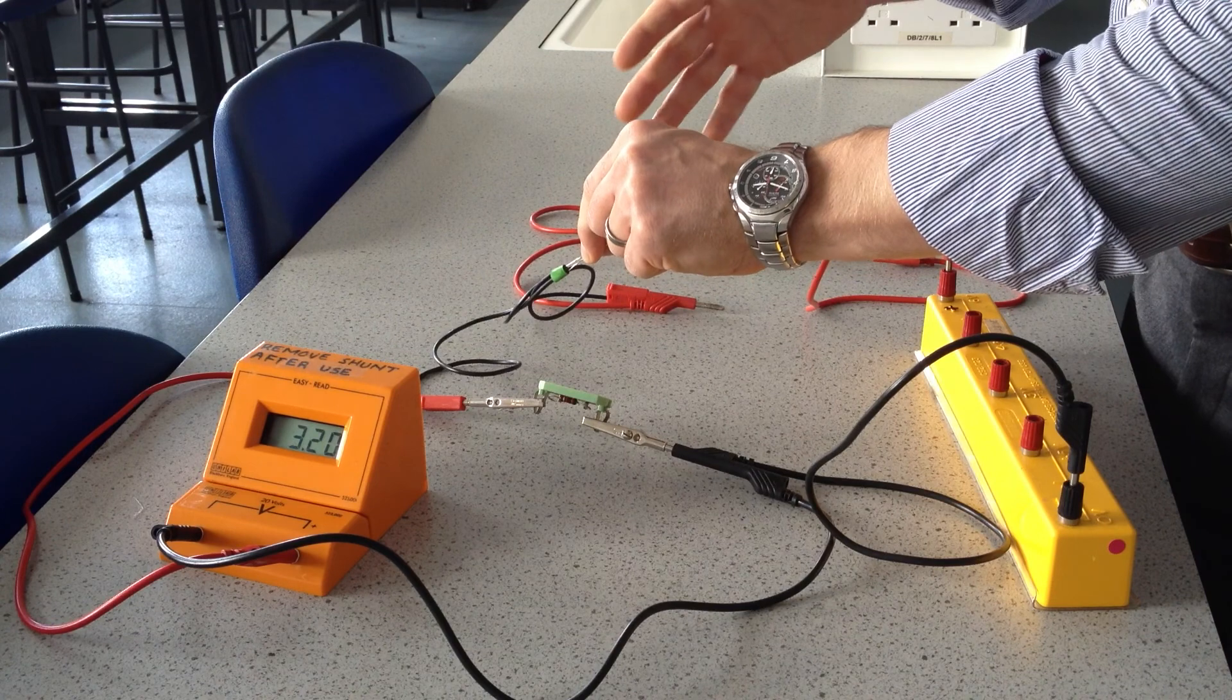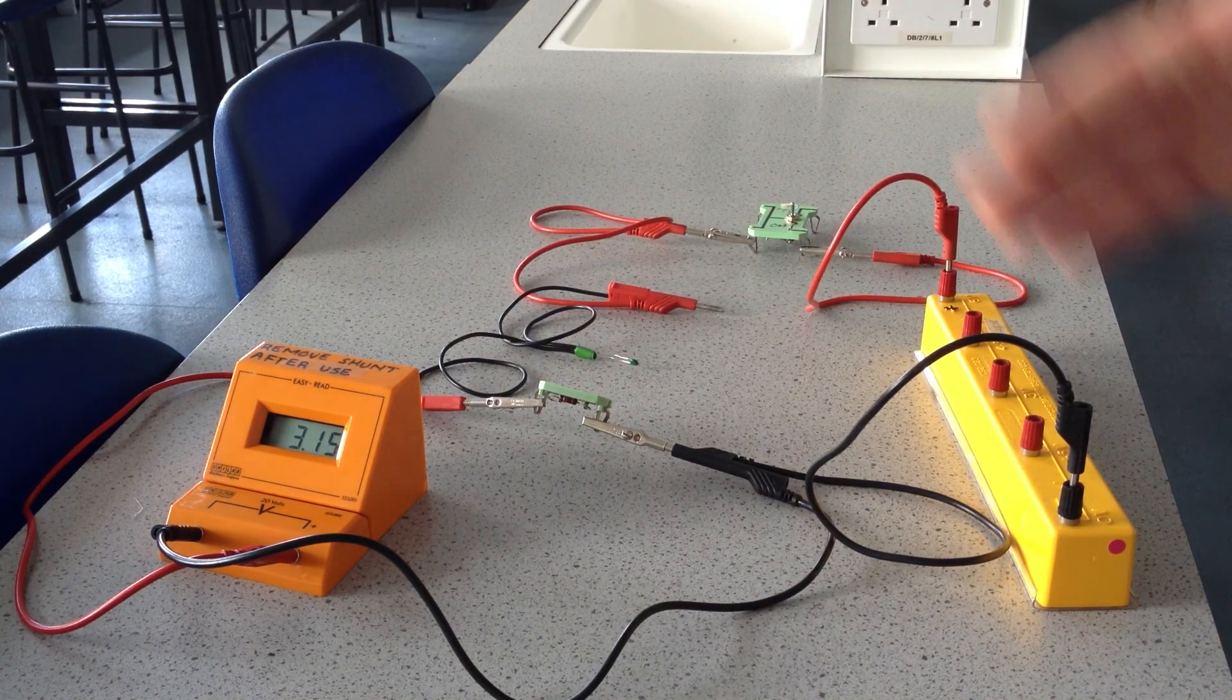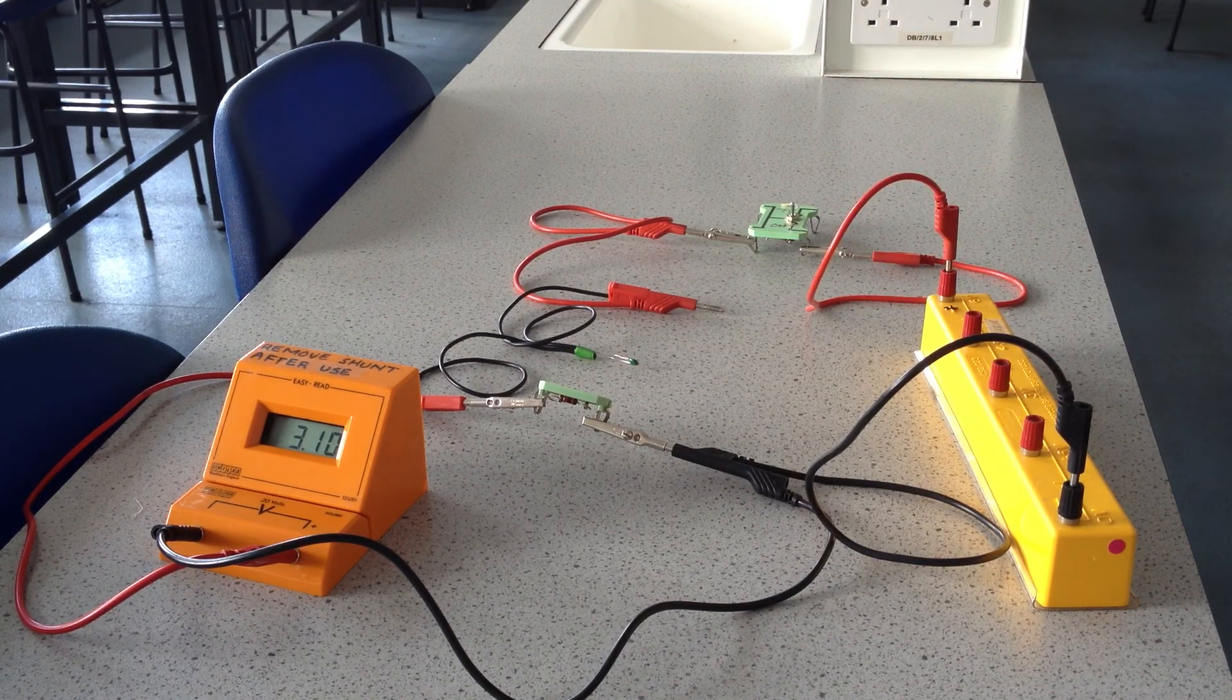And if I allow the thermistor to cool down by taking my fingers off it, that voltage will start to drop and head back to about 2.77 volts.